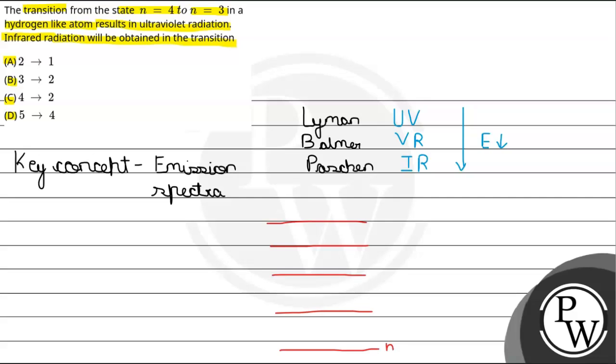ये n equal to 1, n equal to 2, ये n equal to 3, n equal to 4 and n equal to 5. अब हमने क्या क्या transition दिया हुआ है, इसको पहले देख लेते हैं.